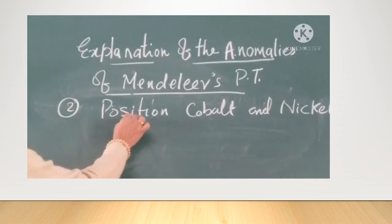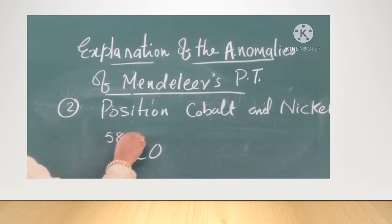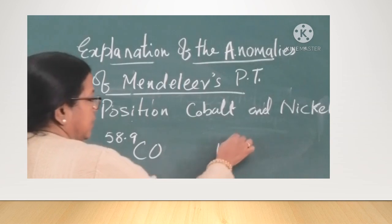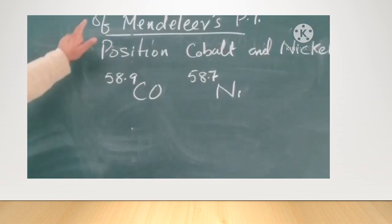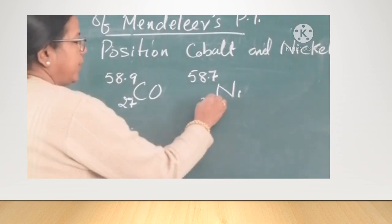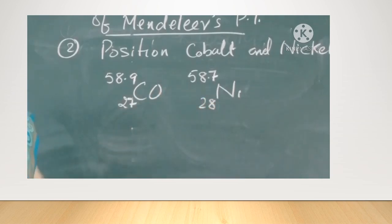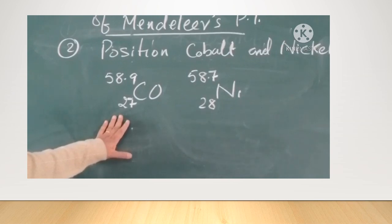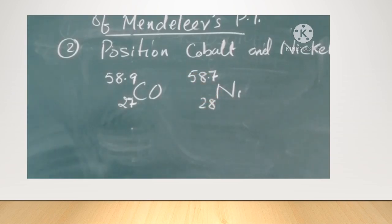The second anomaly corrected is the position of cobalt and nickel. In Mendeleev's periodic table, cobalt with atomic mass 58.9 was placed before nickel whose atomic mass is 58.7, which seemed incorrect. When elements were arranged in the increasing order of atomic number, the atomic number of cobalt is 27 and that of nickel is 28. So automatically, cobalt comes before nickel when arranged in the increasing order of atomic number, and this anomaly from Mendeleev's periodic table was rectified.